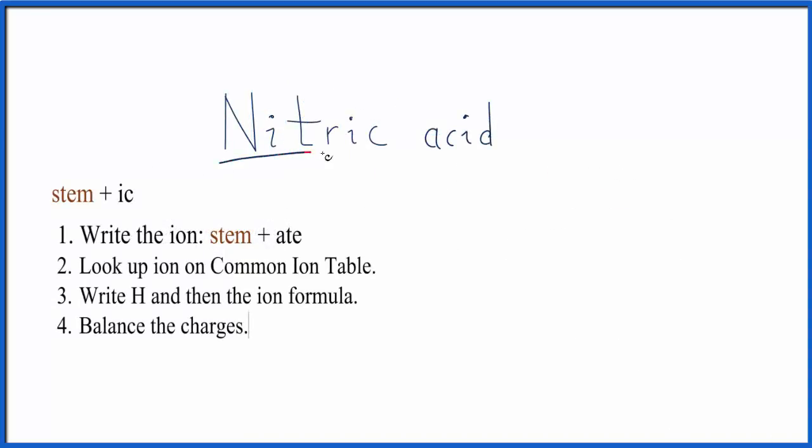So we have our stem, NITR, and we're going to change the IC to ATE. So we write N, and instead of having IC at the end, we're going to write ATE. That means we have the nitrate ion in this acid. So we go to the common ion table, and we're going to look up nitrate.